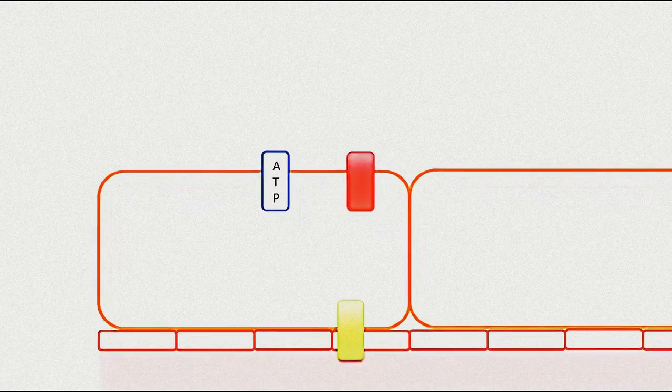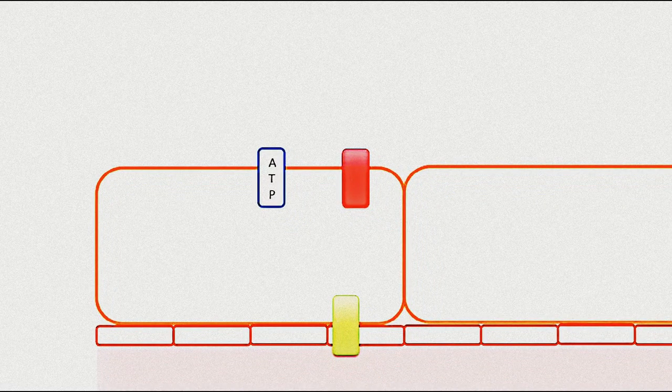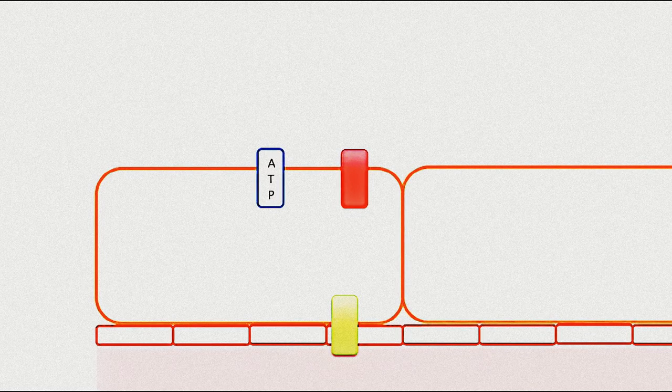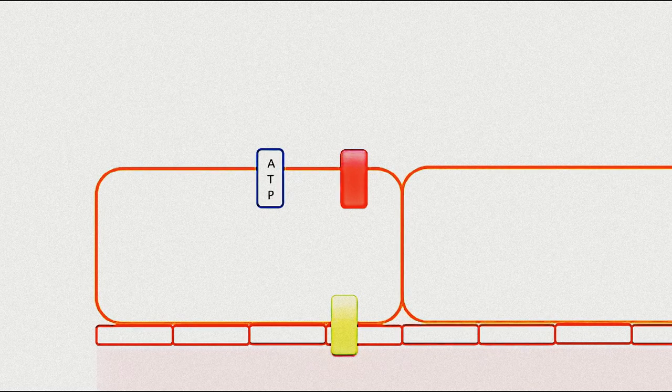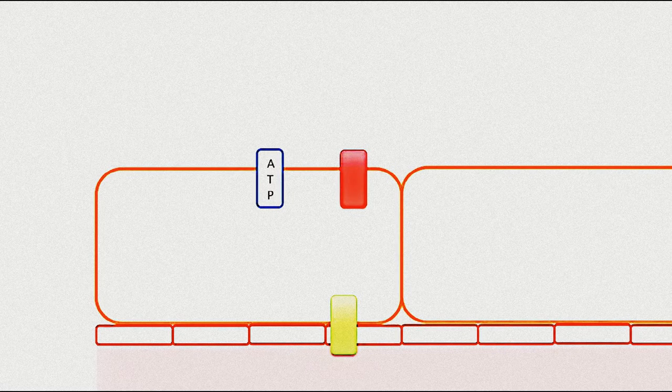This diagram shows the lumen of the tubule at the top, the cells of the tubule wall in the middle and the paratubular capillary at the bottom. Let's go through the sequence of events.